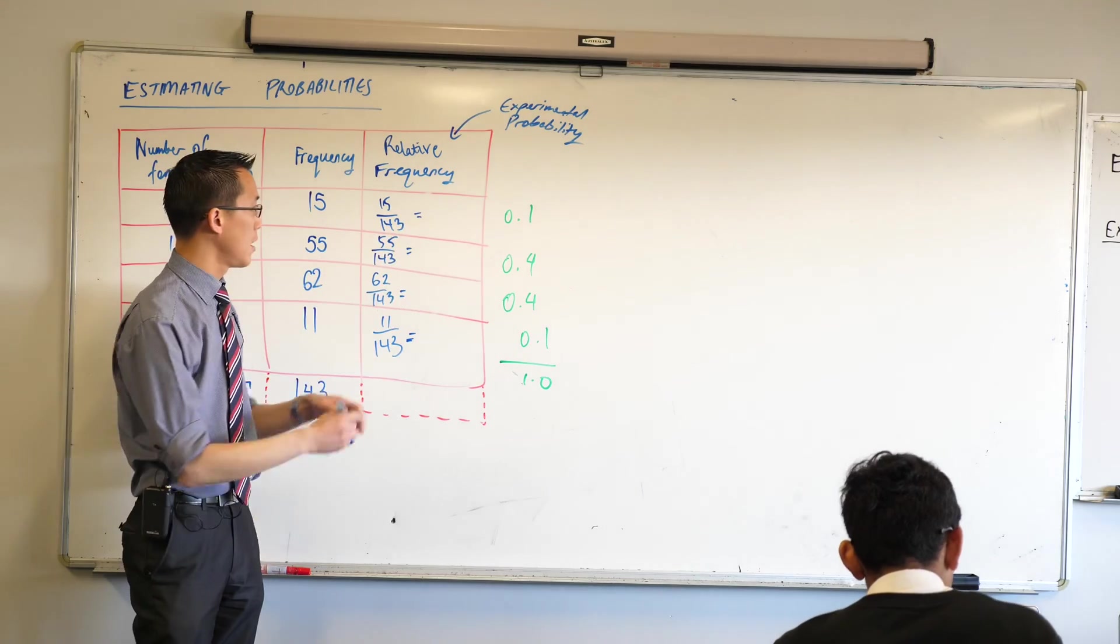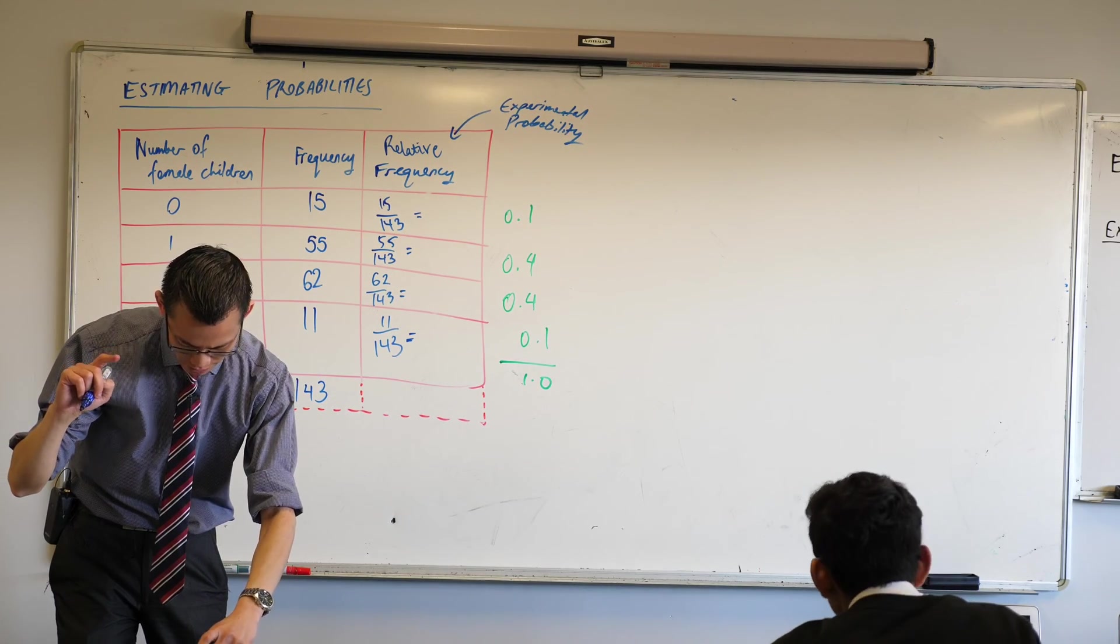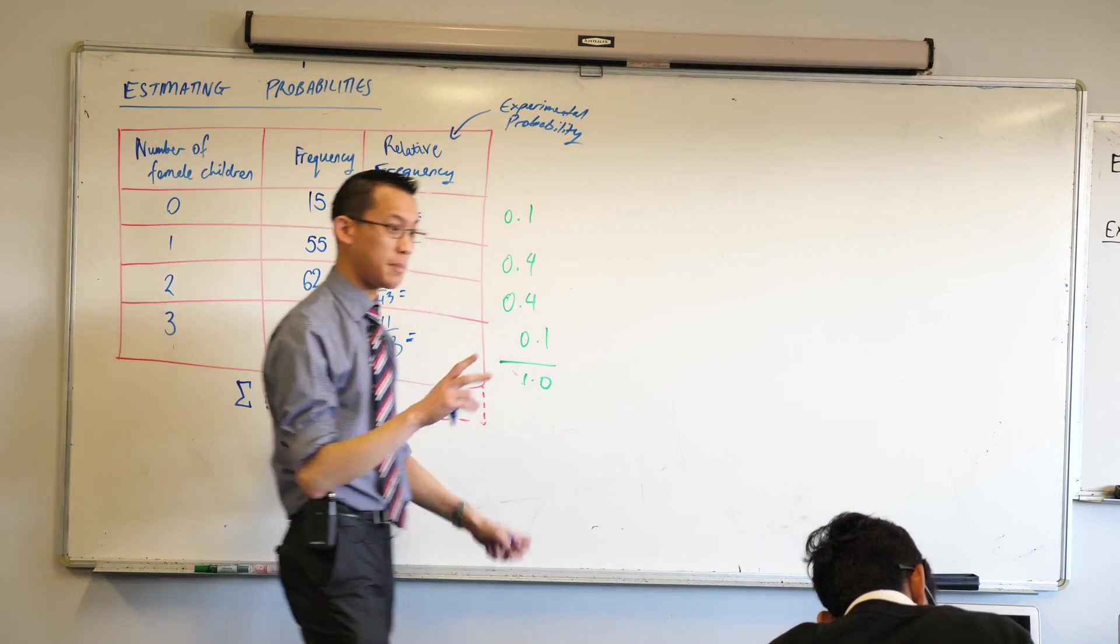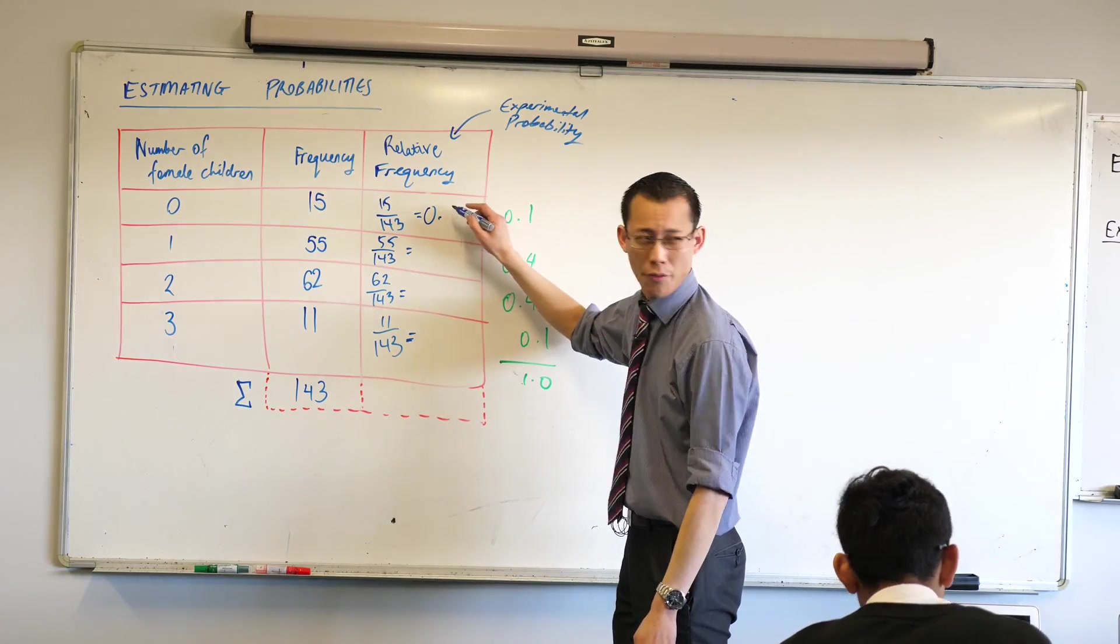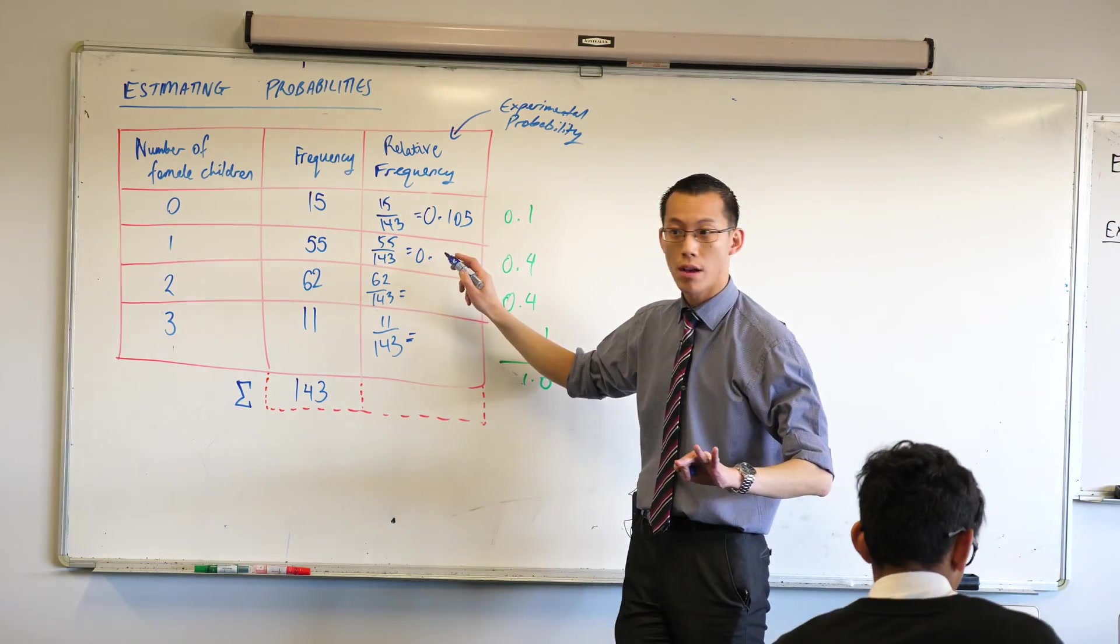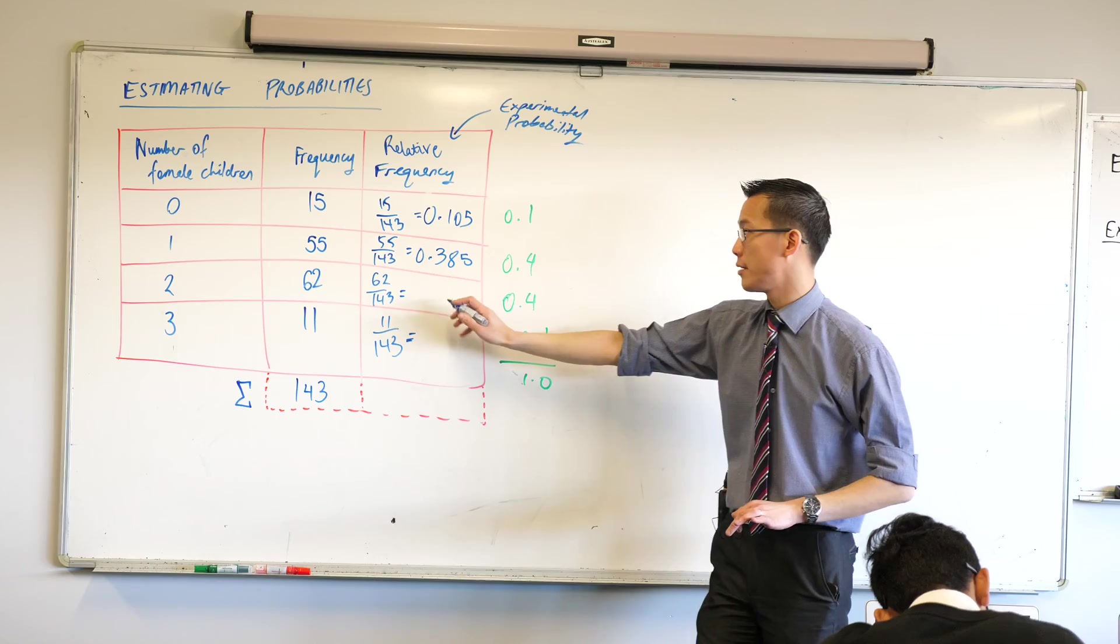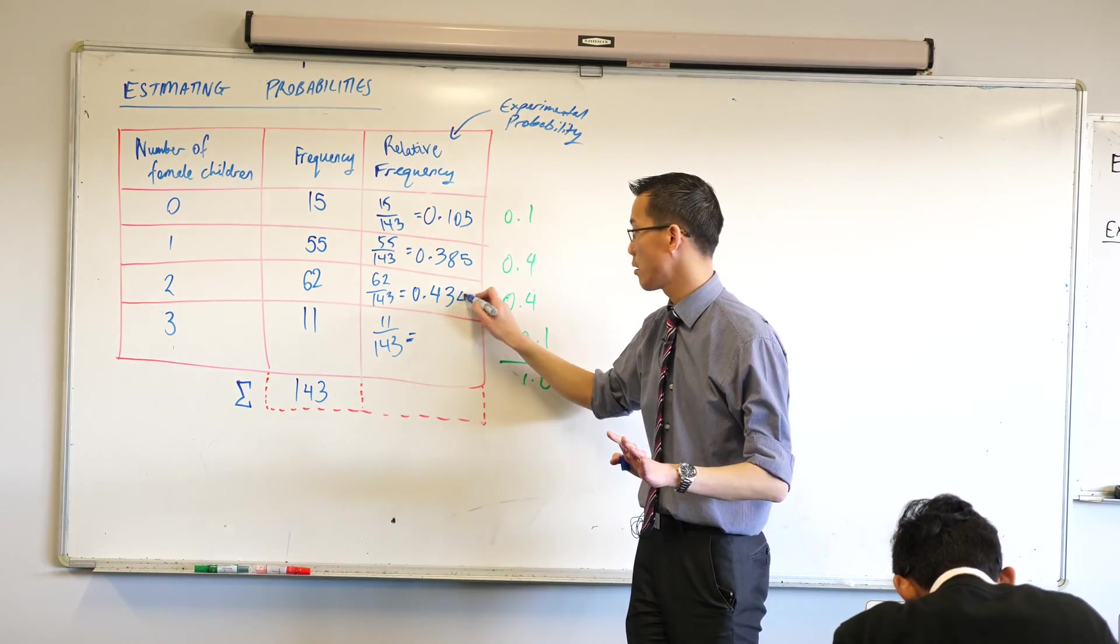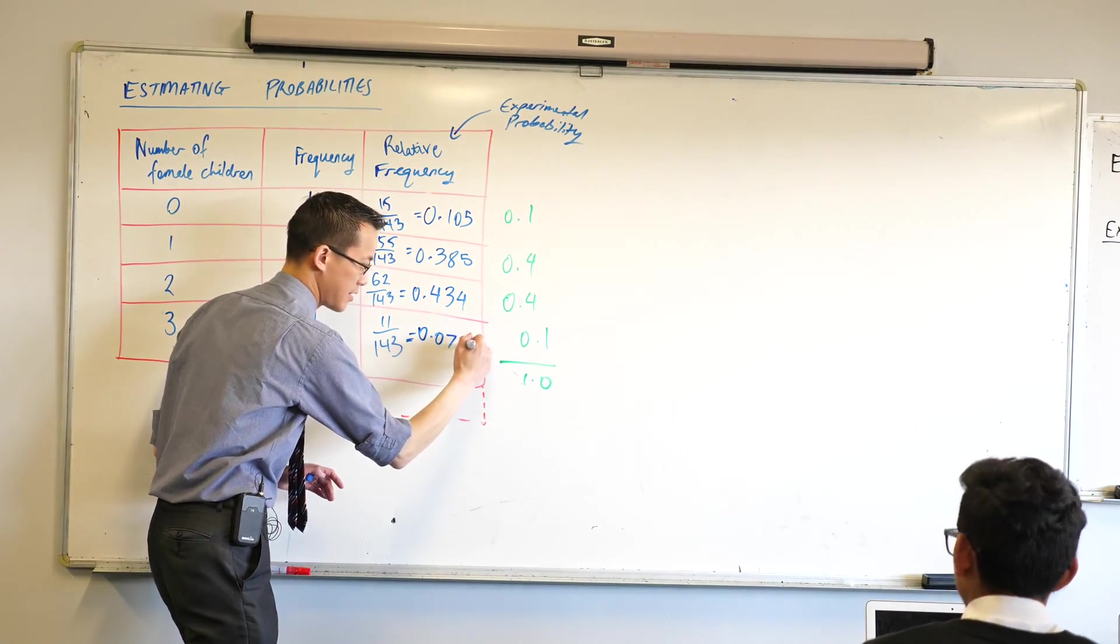This time I do want you to write down, not to one or two decimal places, but to exactly three decimal places. Can someone tell me what the first one is? 0.105. Next one, 0.385. Next one, 0.434. Are we sure on the rounding on that one? And last one, 11 on 143? 0.077. Okay, very good.